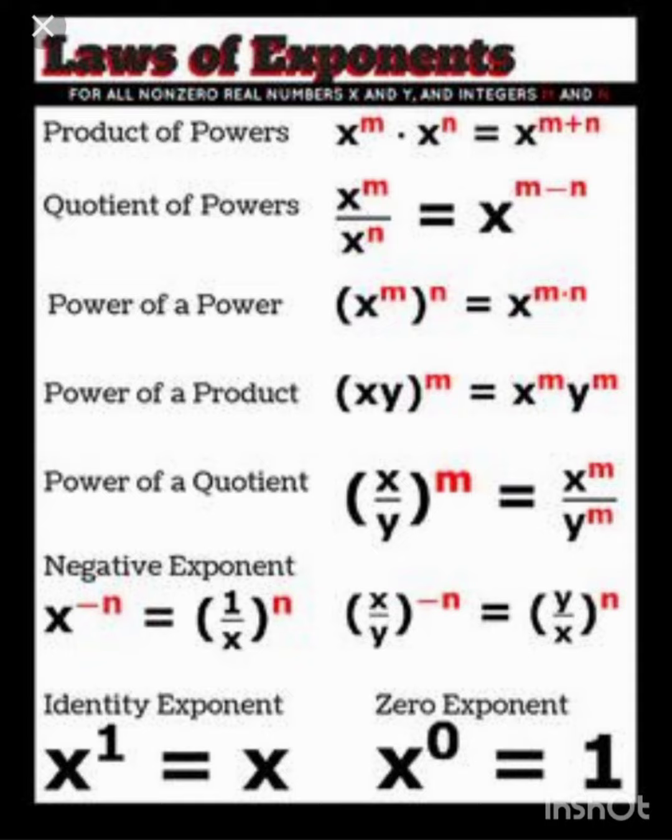Identity exponent. Any base to the power 1 is equal to the base itself. And the last is zero exponent where it states that any base to the power 0 is always equal to 1.